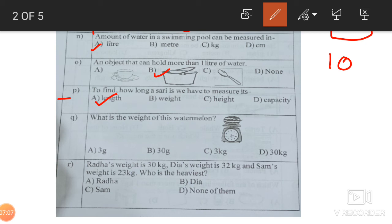Next, what is the weight of this watermelon? Watermelon, you know right? Of course, it's going to be - the measurement is given 1, 2, 3. That is, it's going to be 3 kg. The number is given there. Next, Radha's weight is 30, Diya's weight is 32, and Sam's weight is 23. So who is heaviest? Diya. The one who has more weight is the heaviest.